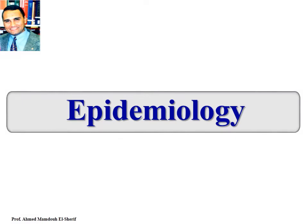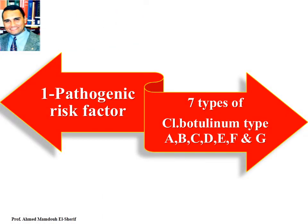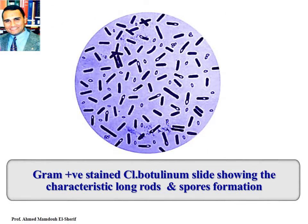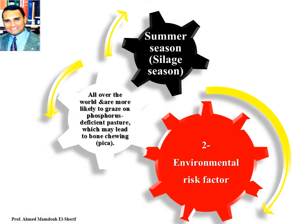Epidemiology. The pathogenic risk factors are the seven types of Clostridium Botulinum, from type A up to G. This photo shows the gram-positive stained Clostridium Botulinum slide, showing the characteristic long growths and spore formation. Botulinum types A through G produce two types of toxins: highly lethal toxins and neurotoxin.